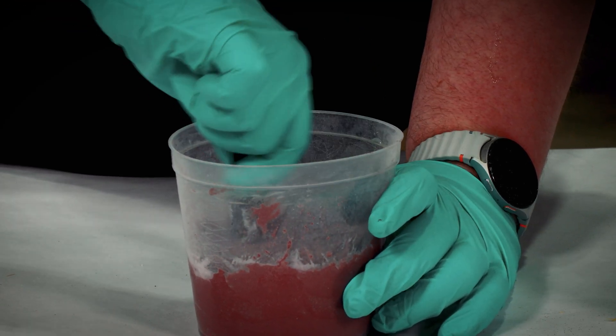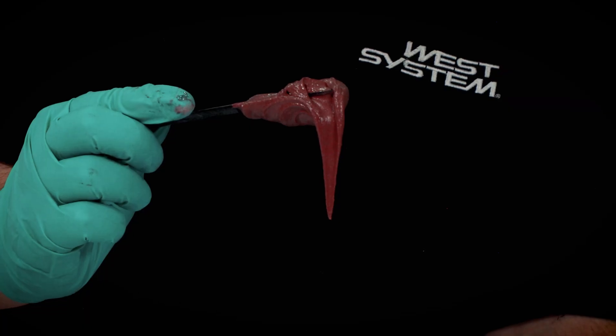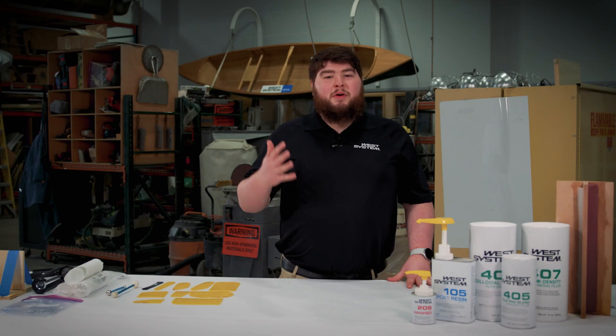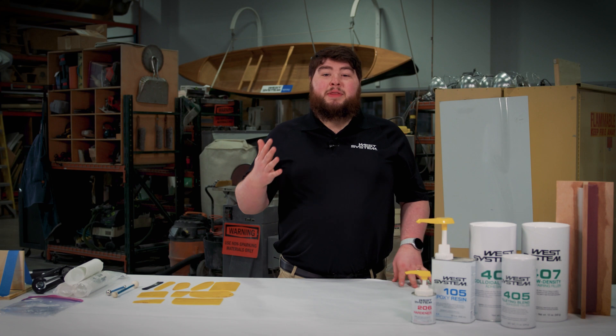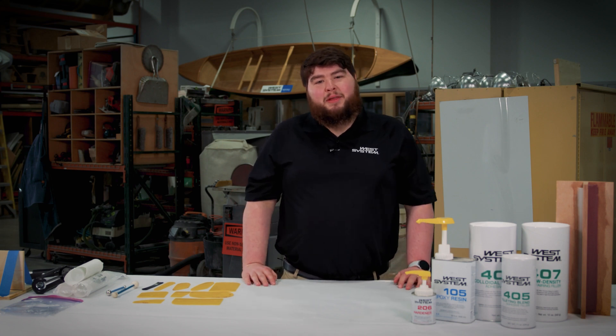Finally, we have our 407 Low Density Filler. It has a dark reddish-brown color and is really light and easy to sand. Though, all of our fillers should leave you with a nice smooth surface that doesn't require very much sanding if your bead is laid down properly.